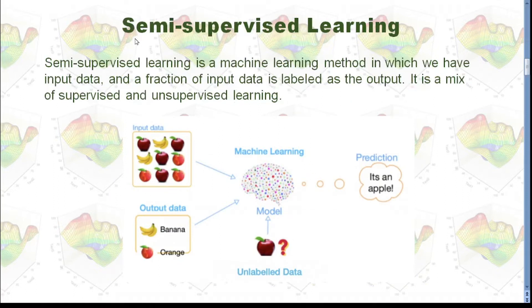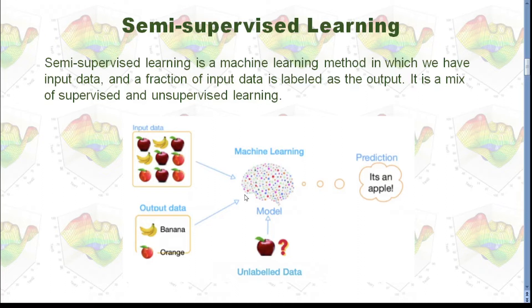And then we have semi-supervised learning. Semi-supervised learning is a machine learning method in which we have input data, and a fraction of that input data is labeled as output. It's a mix of supervised and unsupervised learning. So we have input data where we don't have a label, and we also have output data where we do have a label. We use this input data and output data together to feed our model and try to make predictions.